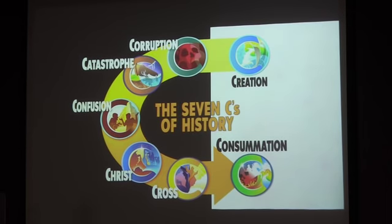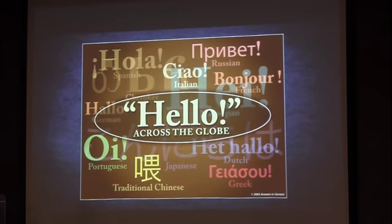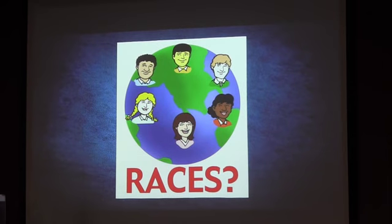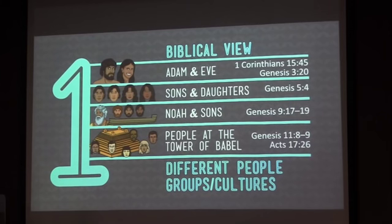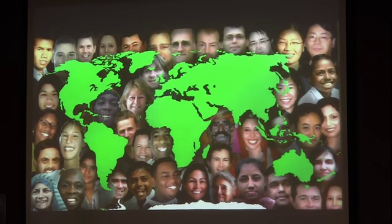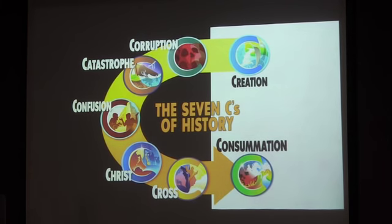Then we come to confusion — the Tower of Babel — which explains why we have all these different languages in the world, and why every country I go to I have to have somebody translate my slides and my speech. It also explains why there aren't races of people. There's one race: Adam's race. There's no such thing as a black race, white race, brown race, or yellow race. There's only one race. Everybody is descended from Adam. We're all made in the image of God, and we all have a sin problem. It doesn't matter what color your skin is because actually we all have the same color of skin — it's just some of us have a little bit more color than others. Genesis is the key to understanding the origin of people groups and languages.